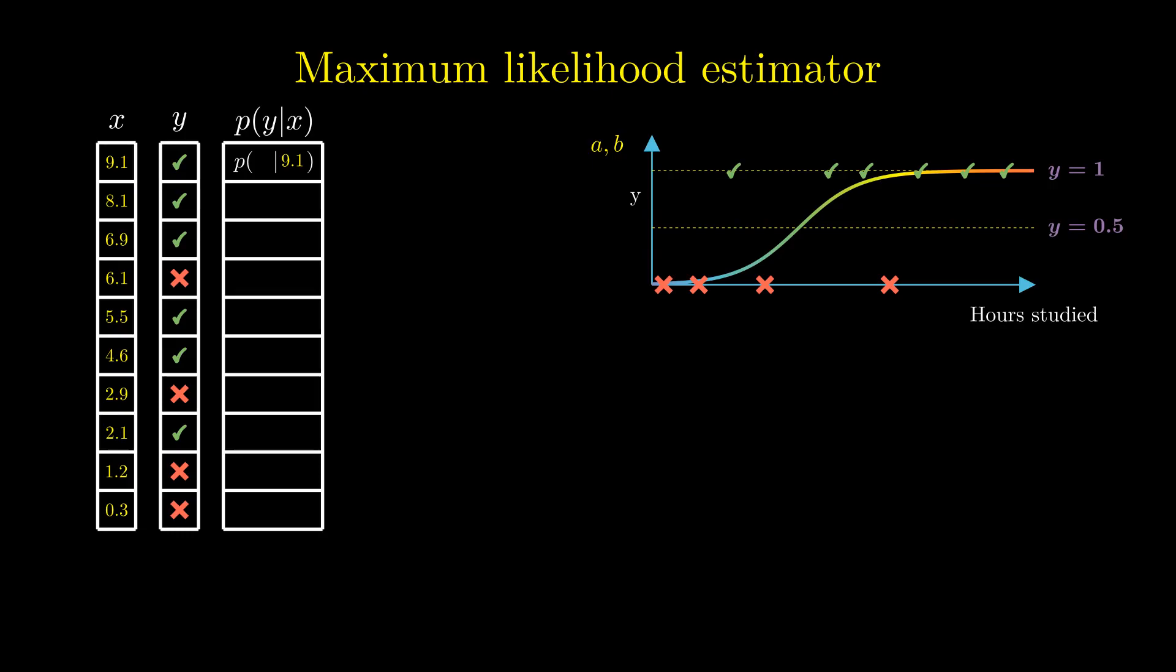Now, we ask our model what it thinks the probability is that this student would pass the exam. Since we want our model's predictions to agree with the data, we want this probability to be as high as possible. On the other hand, the last student only studied for 0.3 hours and, unsurprisingly, failed the exam. Here we want our model to predict that the student would fail. So we want p to be as low as possible.